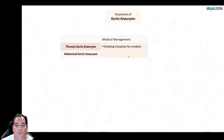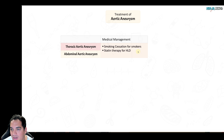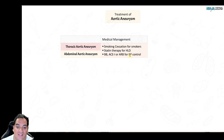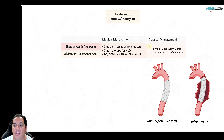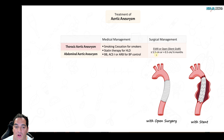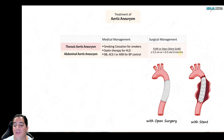Treatment of aortic aneurysms starts with medical management: smoking cessation, statin therapy for hyperlipidemia, and blood pressure control with beta-blockers, ACE inhibitors, or ARBs. Surgical management is indicated if the aneurysm is greater than or equal to 5.5 cm on imaging, or has grown more than 0.5 cm in 6 months, or the patient is symptomatic with hemodynamic instability suggesting rupture or serious complications.